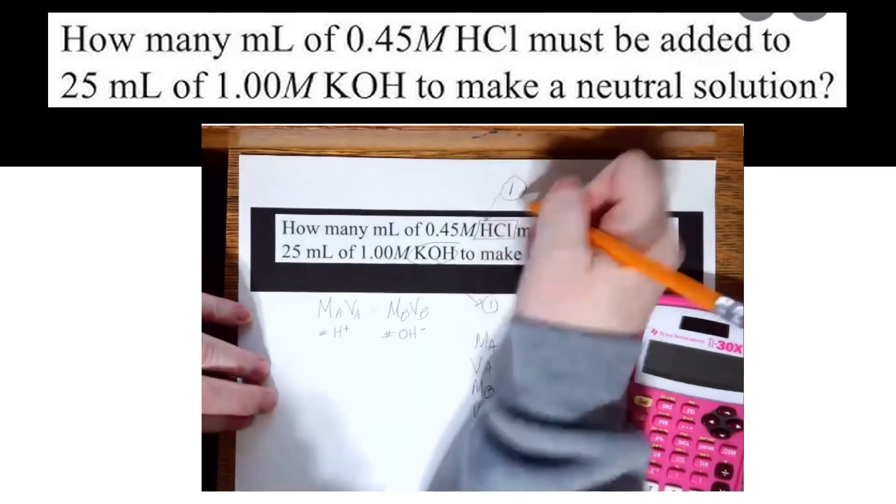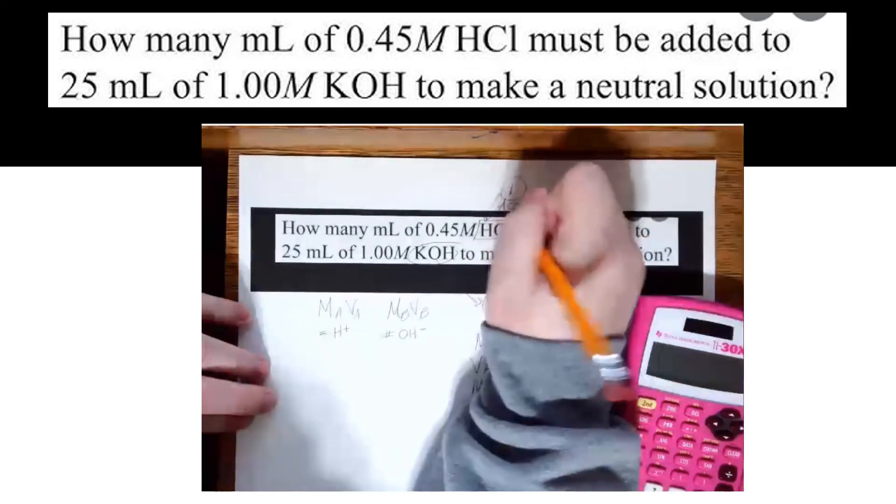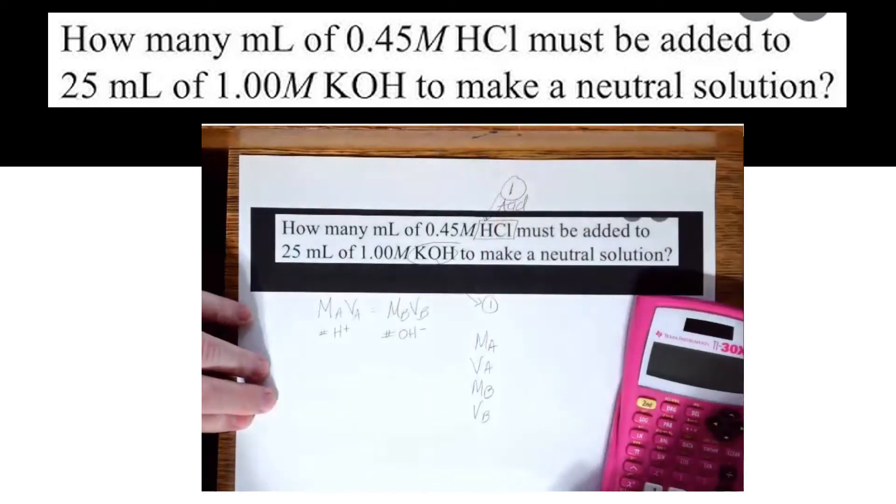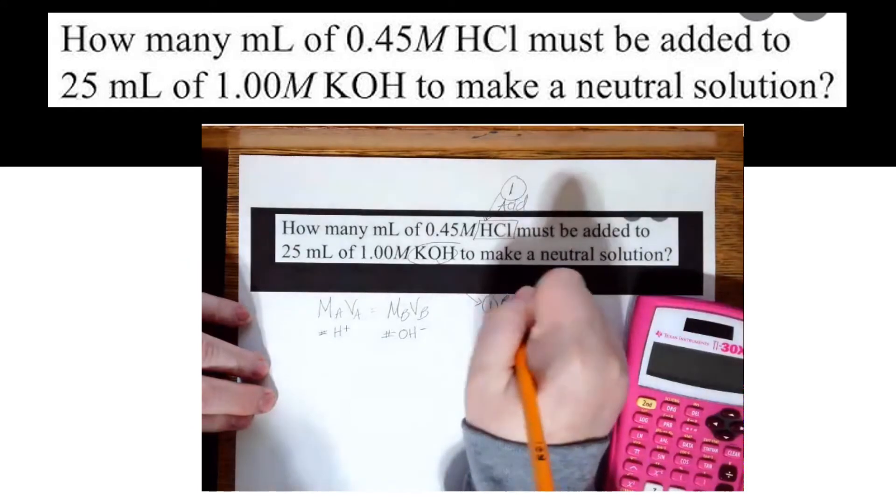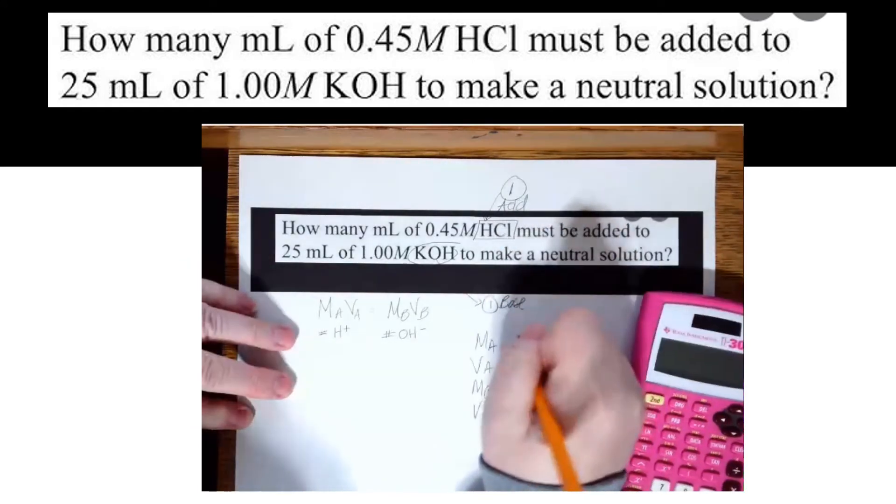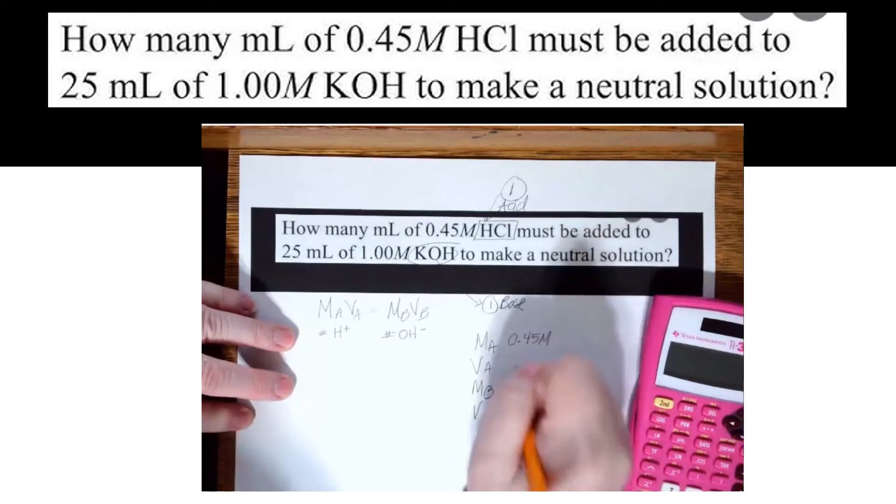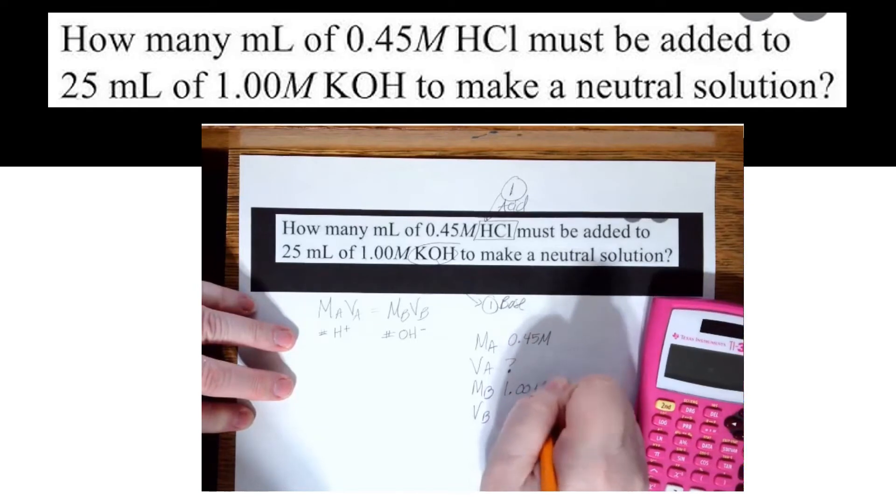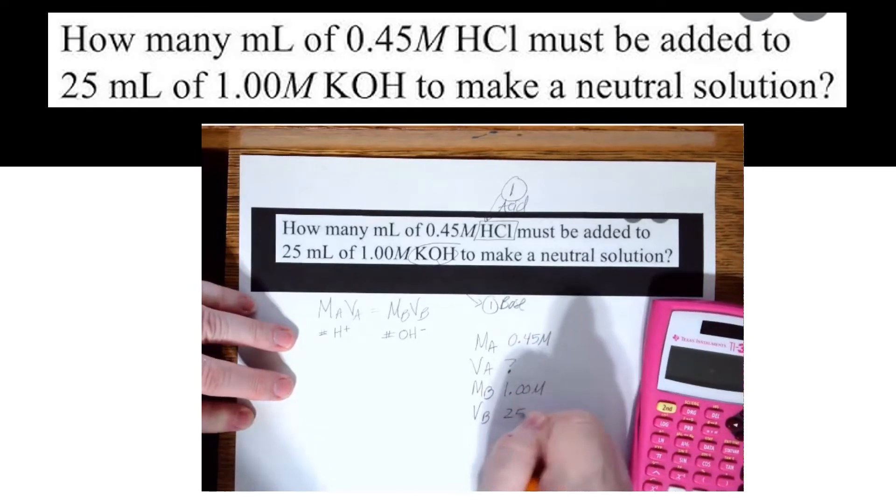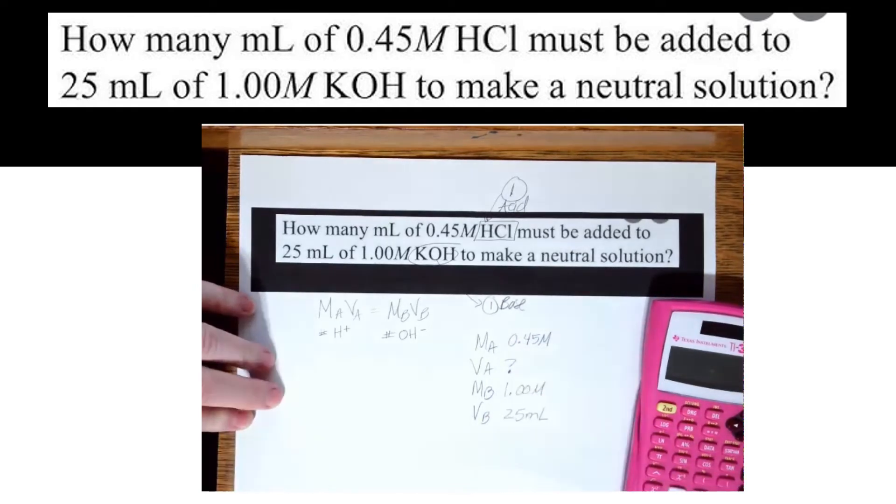Which one is my acid? HCl. The KOH is the base. So the molarity of my acid is 0.45 molar. That's what I'm trying to find. Molarity of my base, 1.00. And my volume of my base is 25 milliliters.